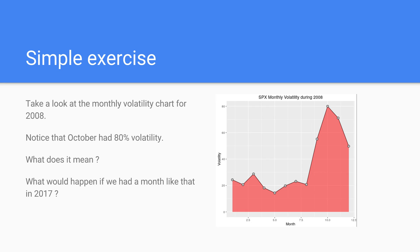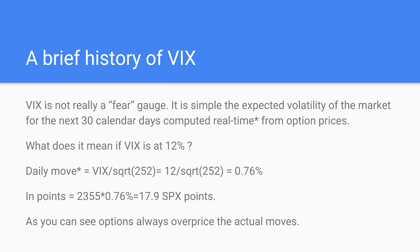The actual calculated move is about 117 points — still an enormous single-day move. If the market moves 117 points down right now, people would think the world is ending. That's the magnitude of what volatility at 80% actually means in real terms, and it's what those who were trading in October 2008 can attest to firsthand.